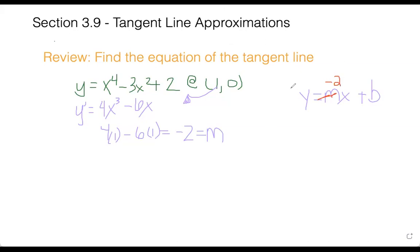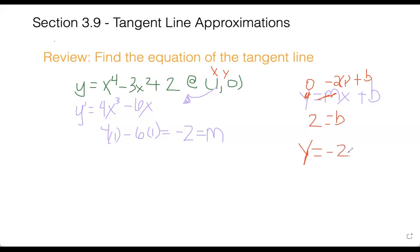Previously we had an x and a y and we plugged those values in with our m. Our y was 0, m was negative 2 times x equals 1, plus b. Solving for b: we add 2 over and get b equals 2. So the equation of our tangent line would be y equals negative 2x plus 2.